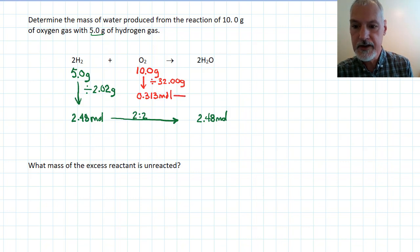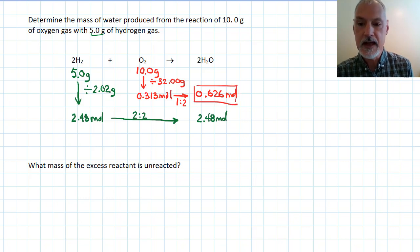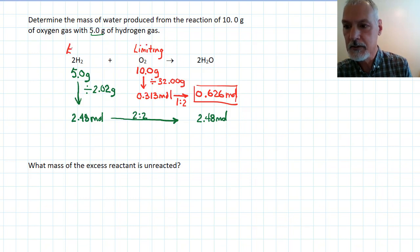Now the ratio that exists between oxygen and my water, the ratio is 1 to 2. So I could make 0.626 moles. This is the smaller of my amounts. That allows me then to say that this is my limiting chemical and the hydrogen, my excess chemical.